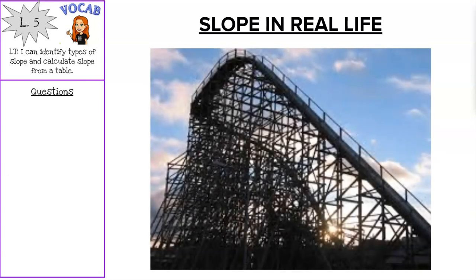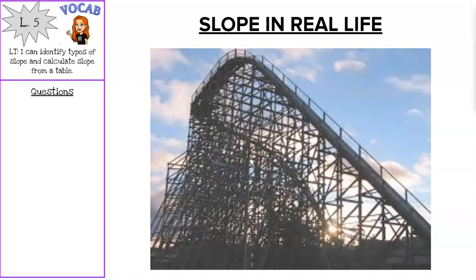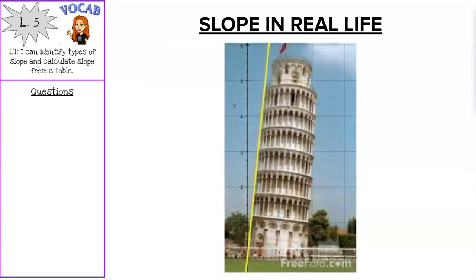And then we have roller coasters. So when you go up that roller coaster and then you go down, they had to calculate all those slopes and make sure that it was all safe for the roller coaster to proceed on the tracks. And then we also have the Leaning Tower of Pisa. So we've got different examples where you can use slope in real life.